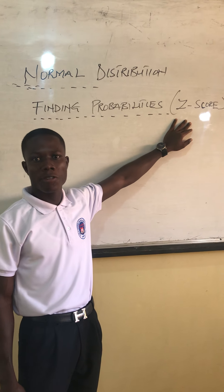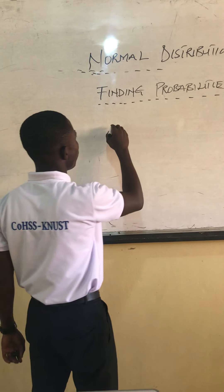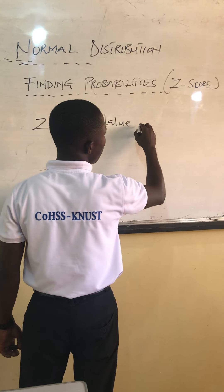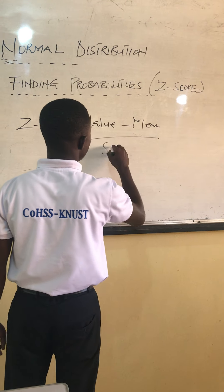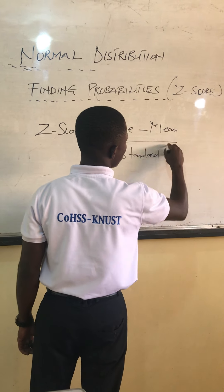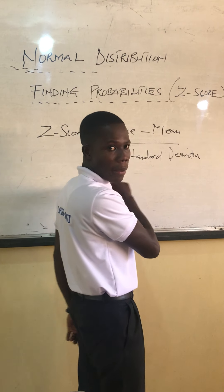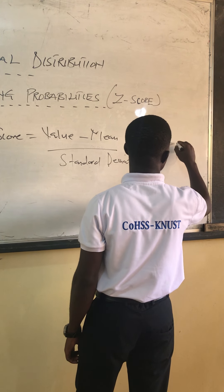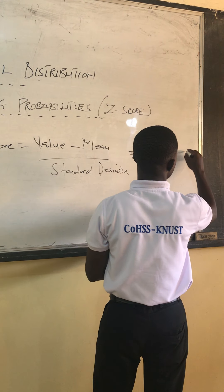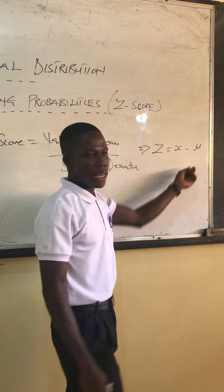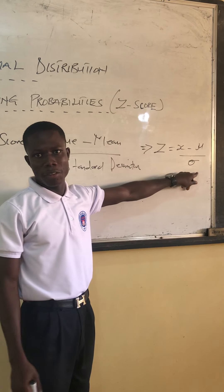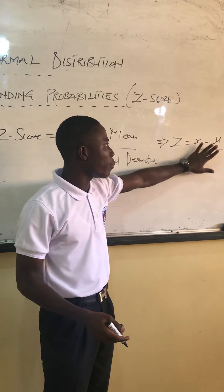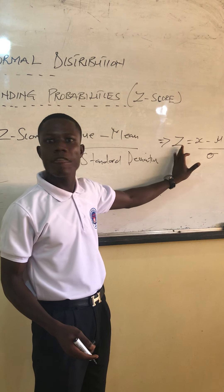We are going to learn how to find them. The formula for Z-score is: value minus mu, over standard deviation. Mathematically, it is written as Z equals X minus mu, over standard deviation. You will be given an example whereby you will have to identify all these numbers, then substitute them into this formula to get your Z. Very simple.